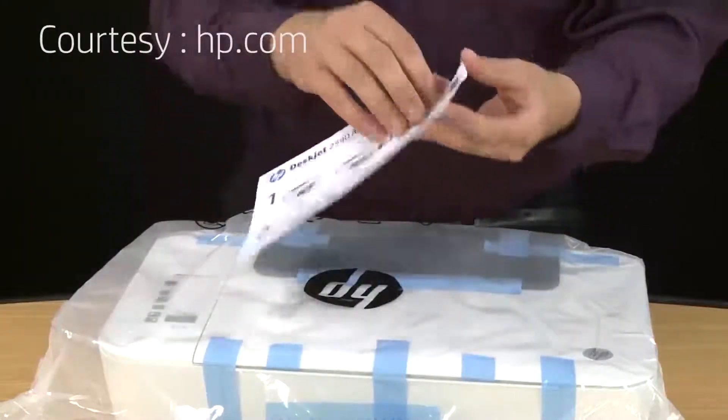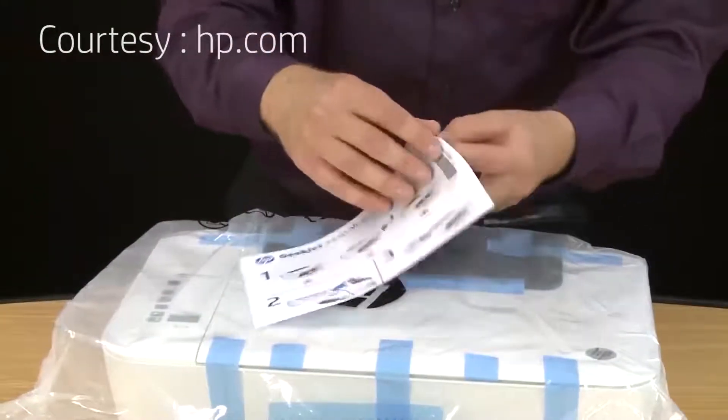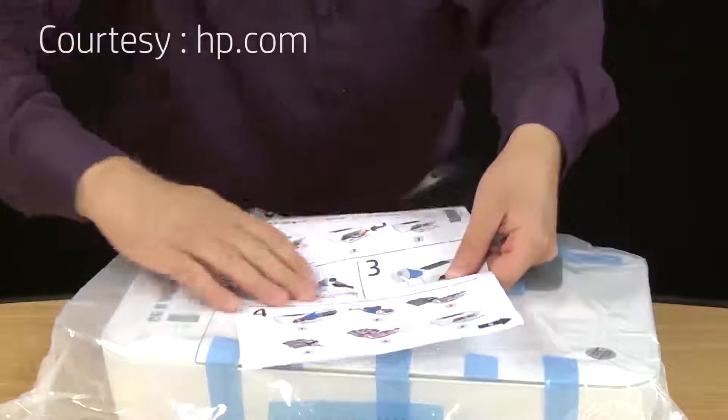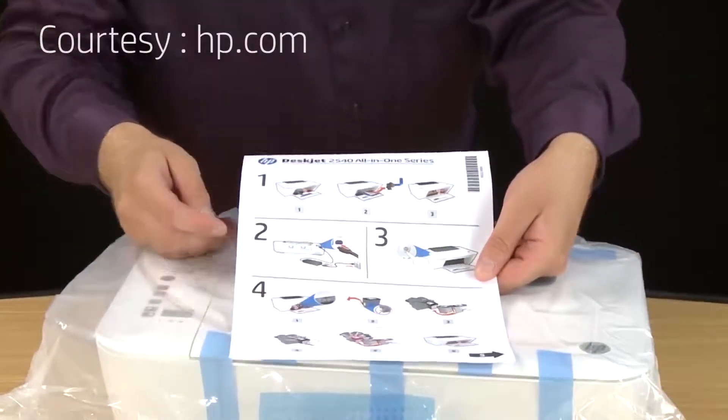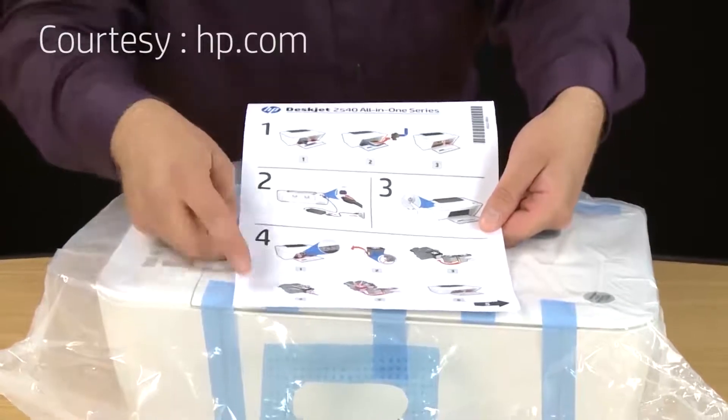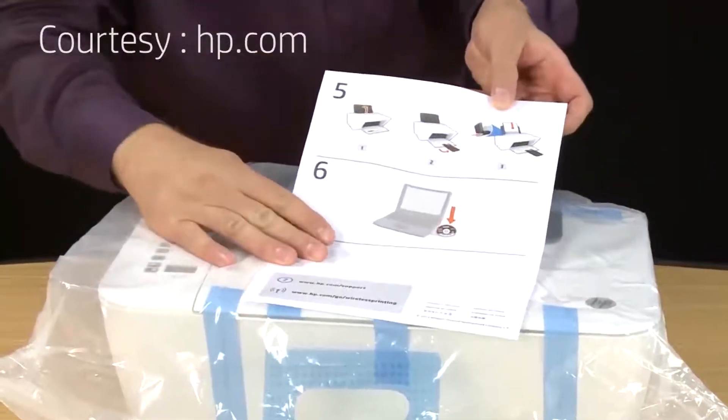This next piece of paper is your getting started guide for your printer. This is your basic step-by-step guide on how to set up the hardware. It's got two sides and basically it's what we're showing you in this video, so it's not really necessary but keep it for future reference.